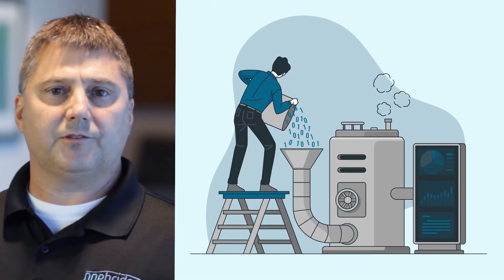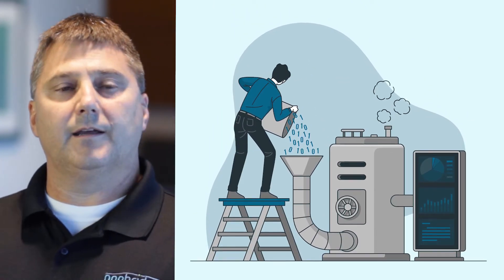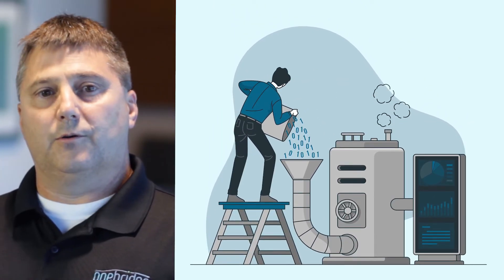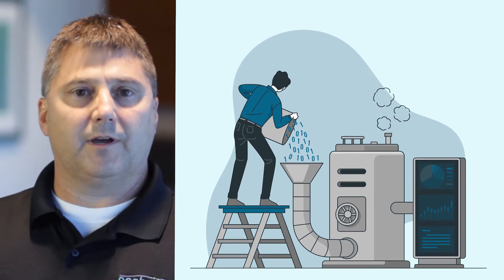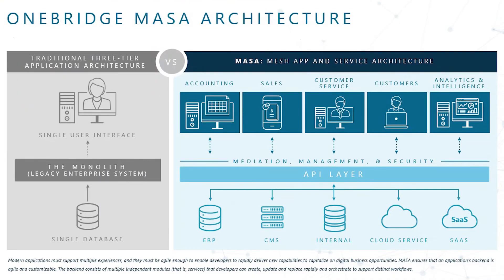A couple of core components to think about with Master Data Management: first is your data ingestion strategy — how do you get data in? That could be real-time, that could be batch, or it could be on a scheduled basis using APIs. Then you have a data quality process, and that data quality will enrich the data to improve its quality.